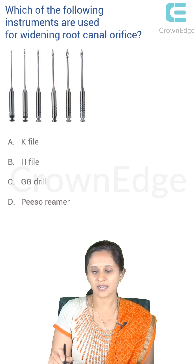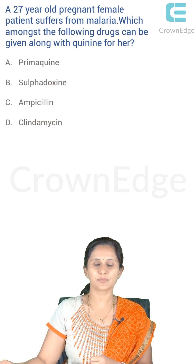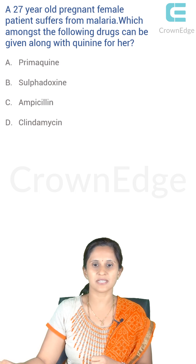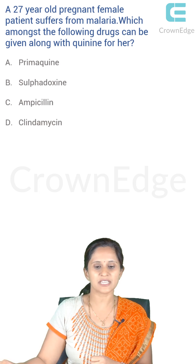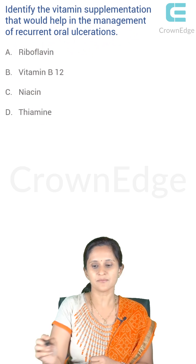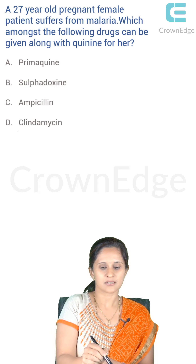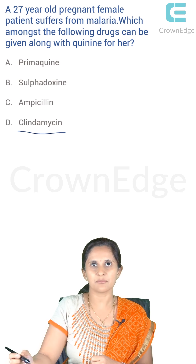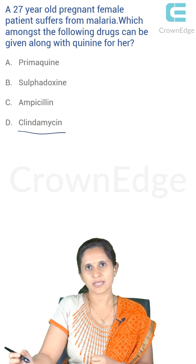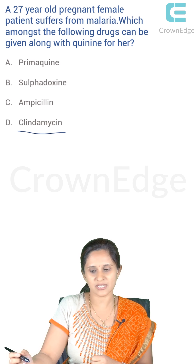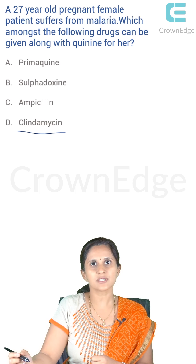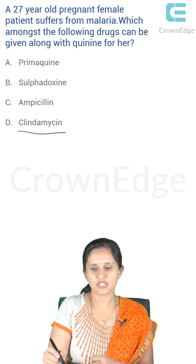A 27-year-old pregnant female patient suffers from malaria. Which amongst the following drugs can be given along with quinine? You can give clindamycin — that's the preferred drug. Clindamycin can be used along with quinine for patients and can be used during pregnancy because it has limited teratogenic effects.